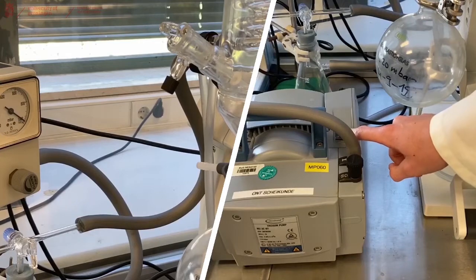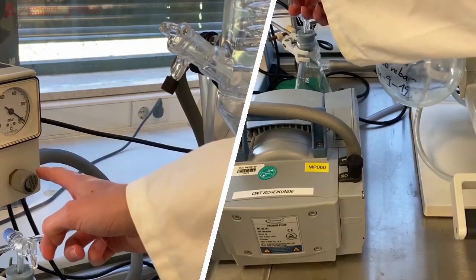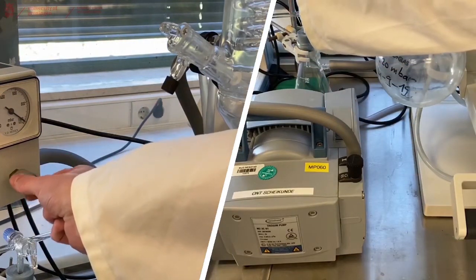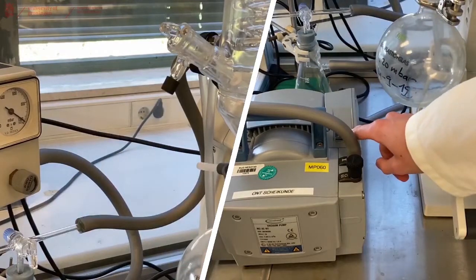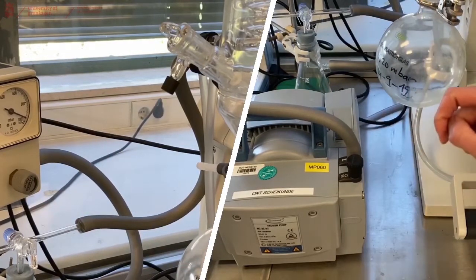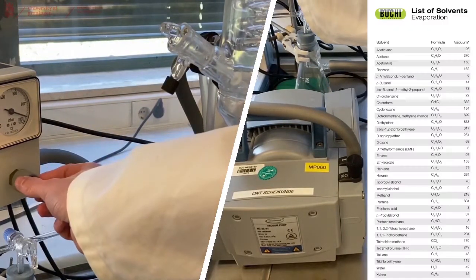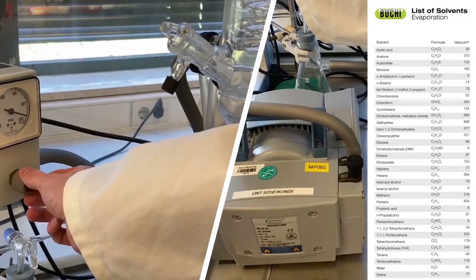Make sure that before you turn on the pump, that the pressure gauge is all the way in the open position. Turn on the pump. And slowly close the pressure gauge until it reaches the pressure you need for your solvent.